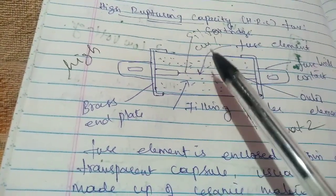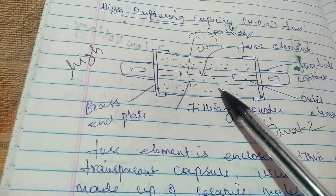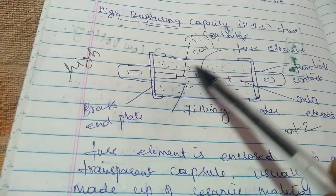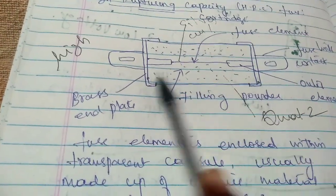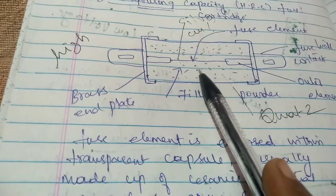When it starts melting, that silver would be vaporizing. That vapor will combine with the filling powder and there will be an arc extension. Normally the fusing element is connected to the middle. The temperature would be 230 degrees Celsius.